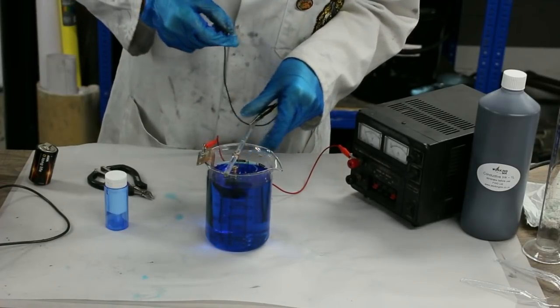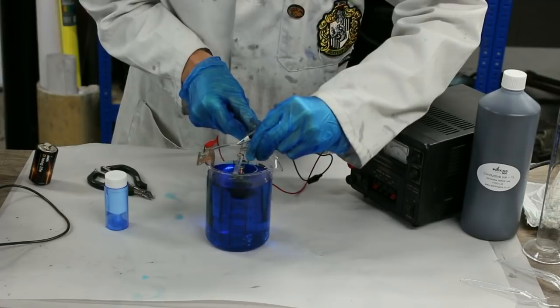And then I'm going to clip the black one to the cathode. I might put that the other way round, don't want them coming into contact with each other.